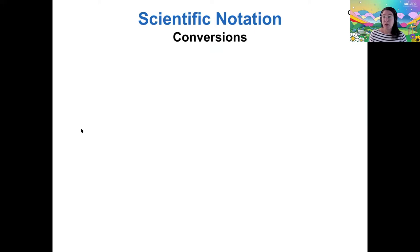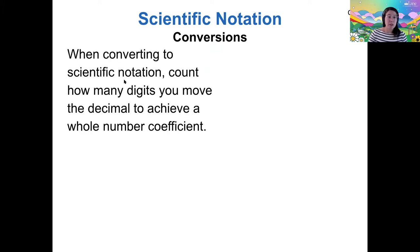When we do mathematical operations in scientific notation, this is how it works. If we are converting to scientific notation from standard form, you basically want to count how many digits you need to move the decimal in order to achieve a whole number coefficient. So if you move to the left in your number, you need to multiply by 10.